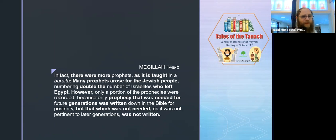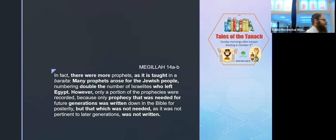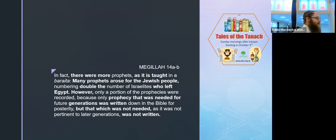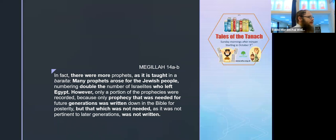Most prophets are not giving you mitzvot - they're giving you history or predictions for the future, or warnings about what will happen if you misbehave. The real reason I raised this was for the next bit: the Talmud says there were more prophets. It was taught in the Braita: many prophets arose for the Jewish people, numbering double the number of Israelites who left Egypt. Do your maths - 600,000 left Egypt, so that's 1.2 million prophets.